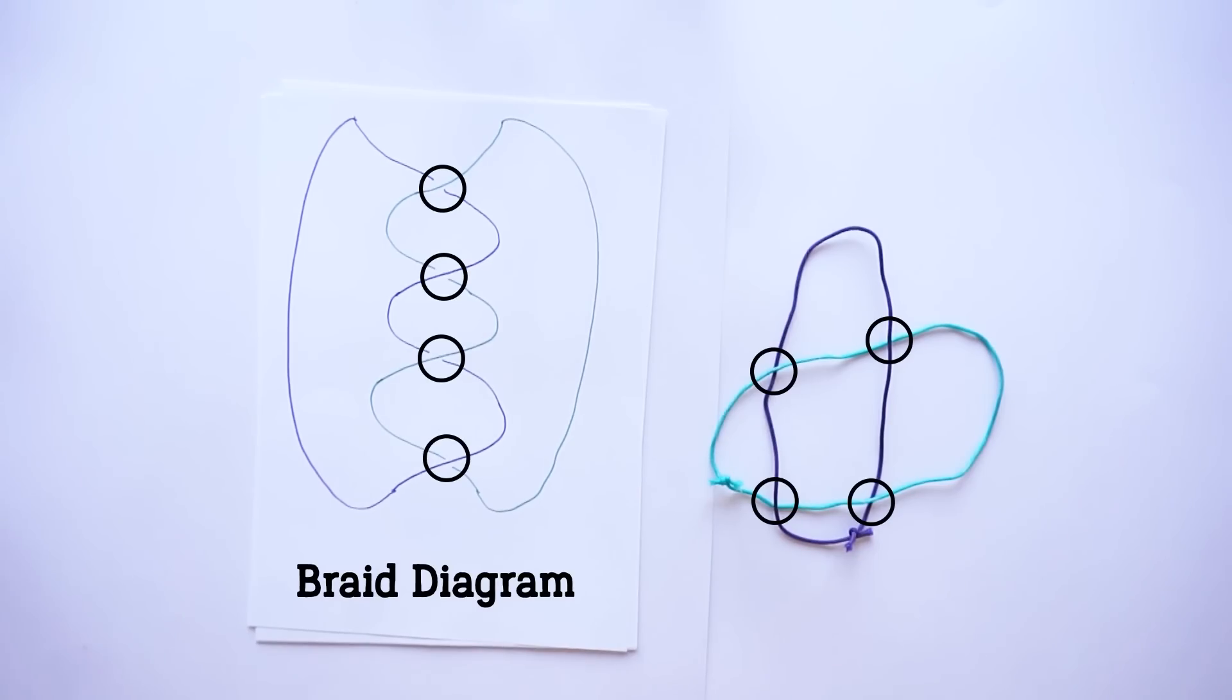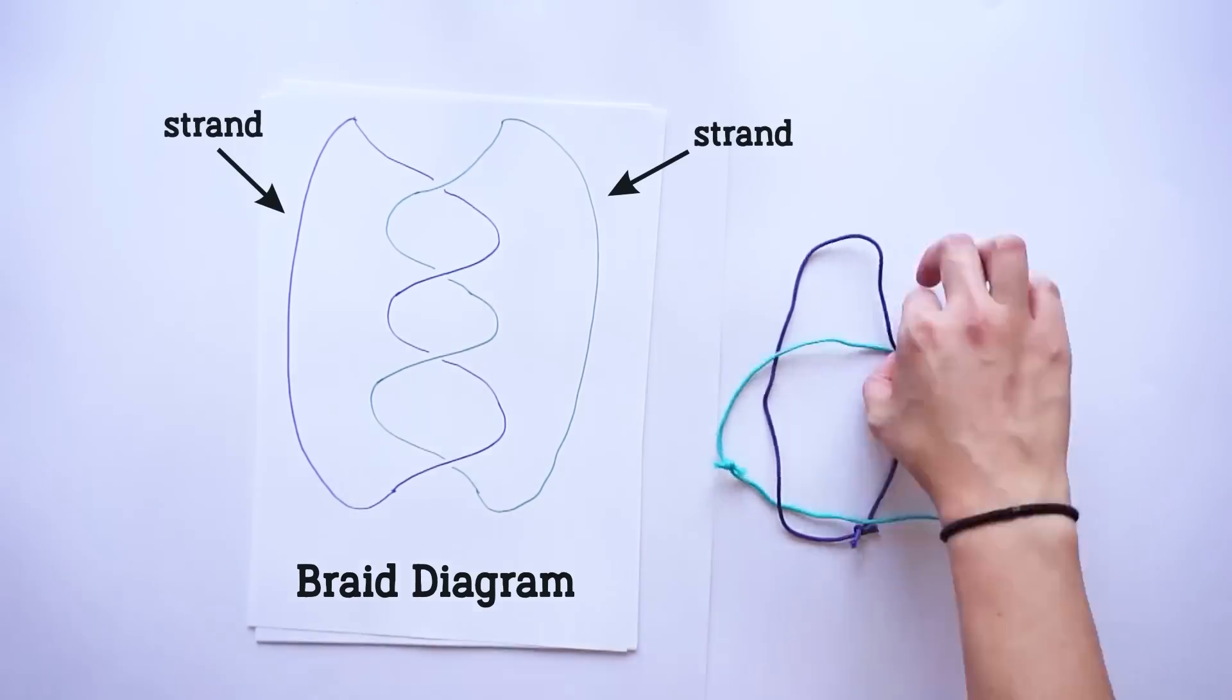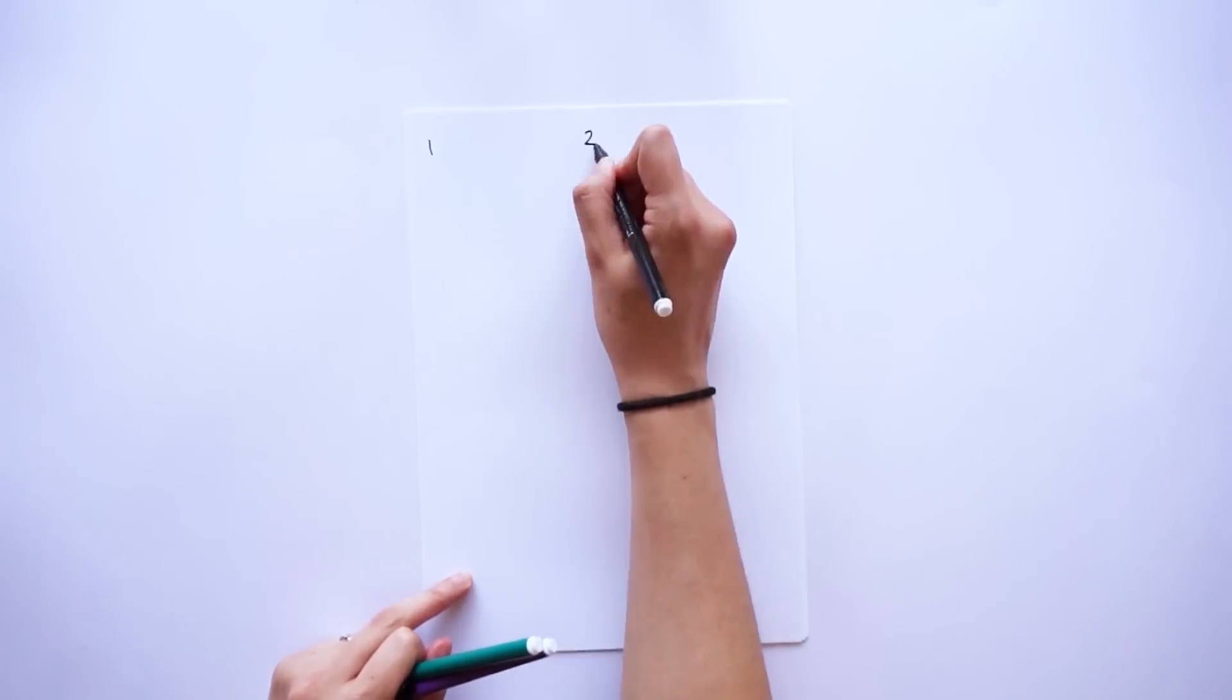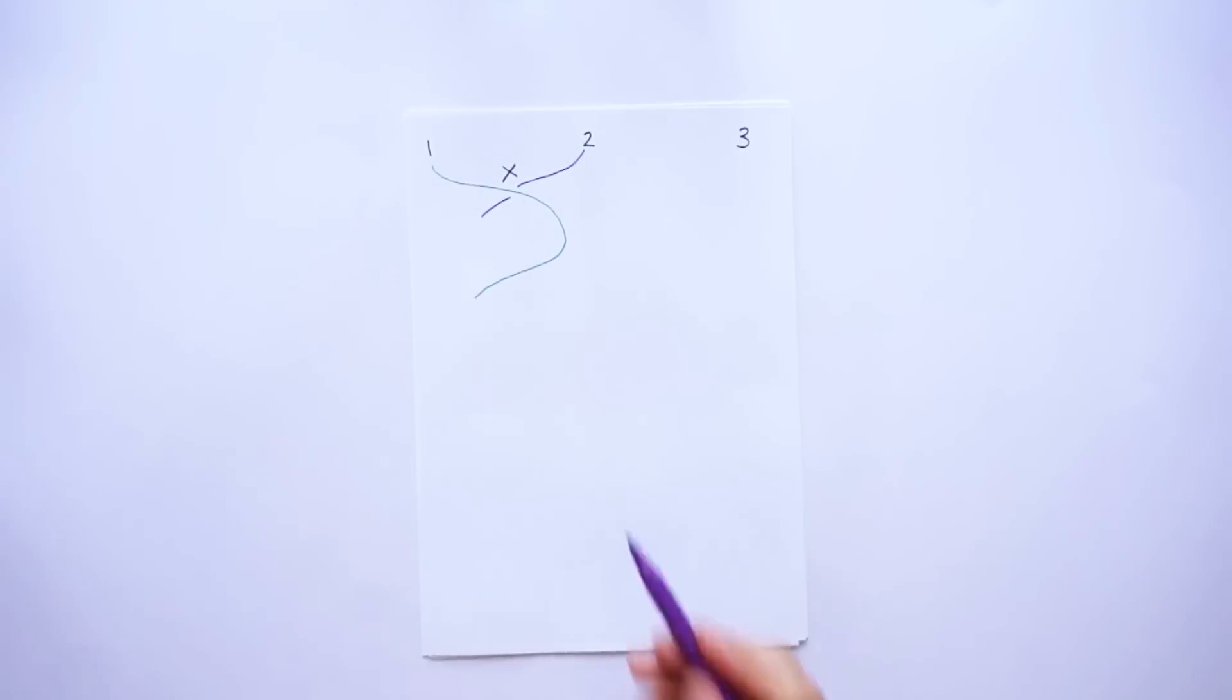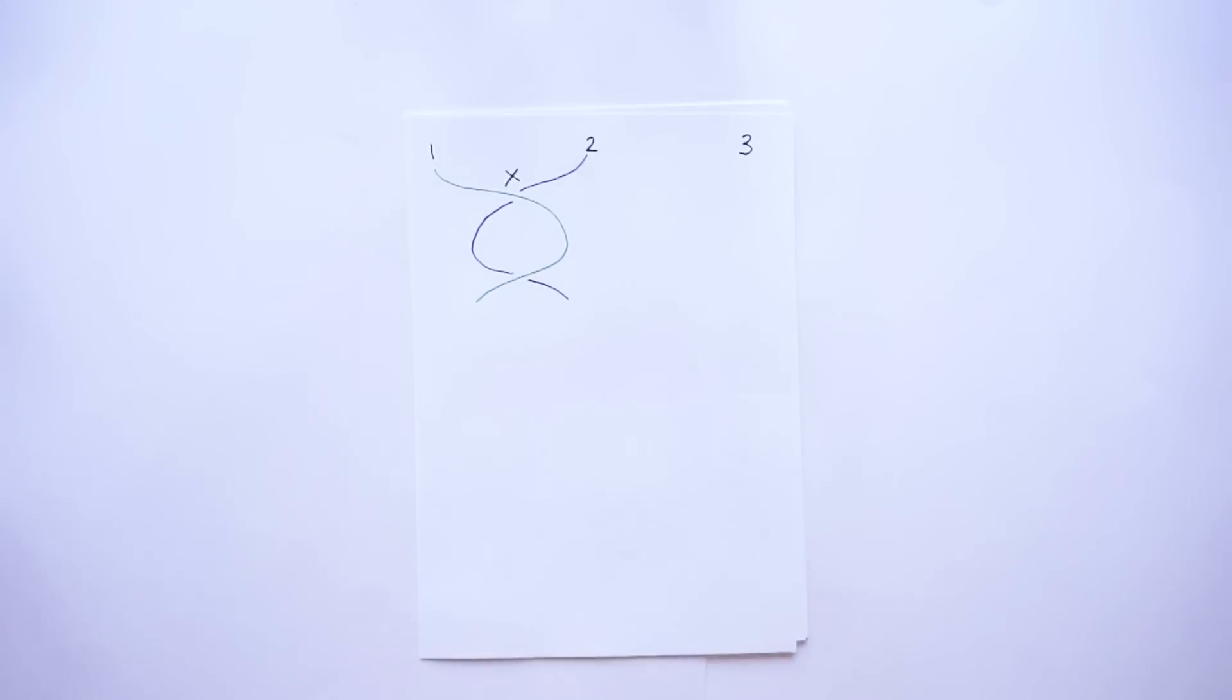In a braid diagram, the lines representing our strings are called strands. If we label the strand positions 1, 2, and 3, when the strand in position 1 crosses over the strand in position 2, we can label this crossing x. And when the strand in position 1 crosses under the strand in position 2, we'll call this inverse x, as it basically undoes what x just did.